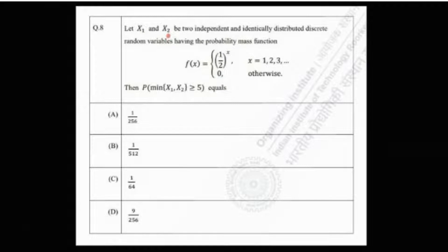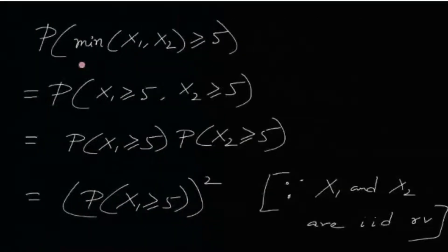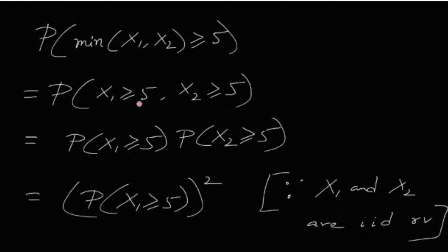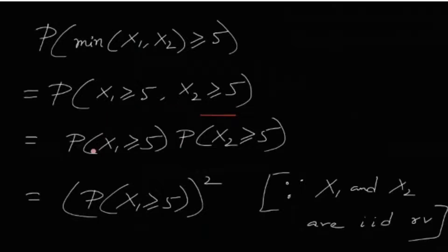They are identically distributed, meaning they have the same distribution function. They are IID — independent and identically distributed. Now, P(min(X1, X2) ≥ 5) means that both of them are greater than or equal to 5, because if the minimum between the two is greater than or equal to 5, it must be the case that both are greater than or equal to 5. Since they are independent, we can write it as P(X1 ≥ 5) × P(X2 ≥ 5).